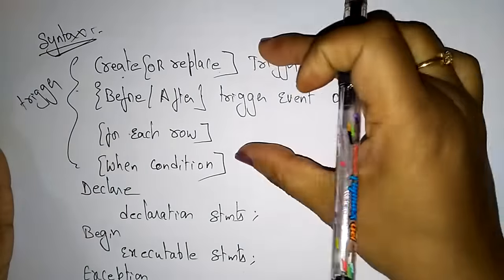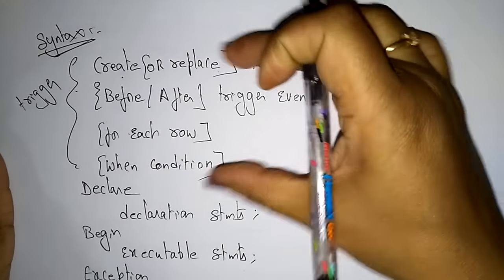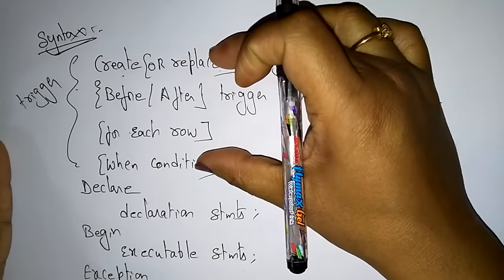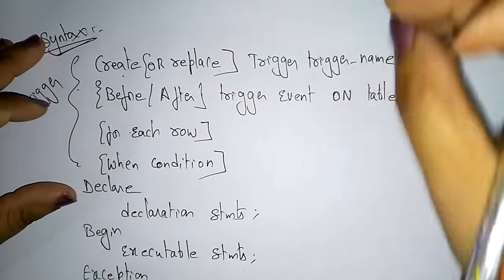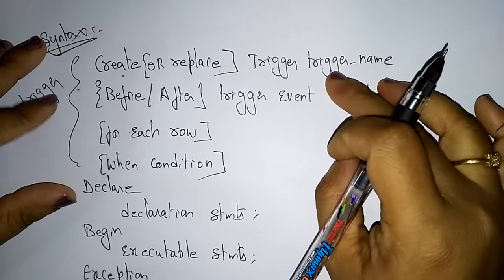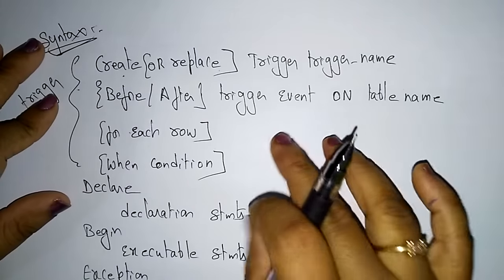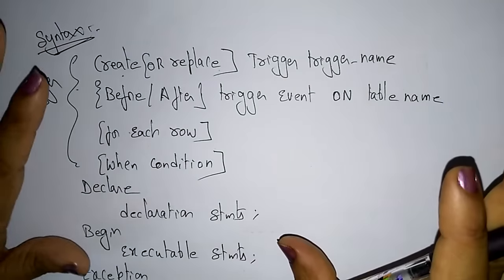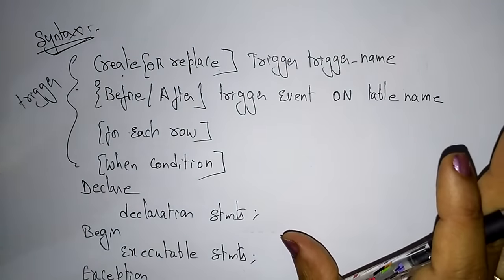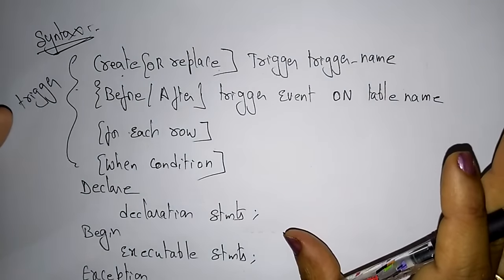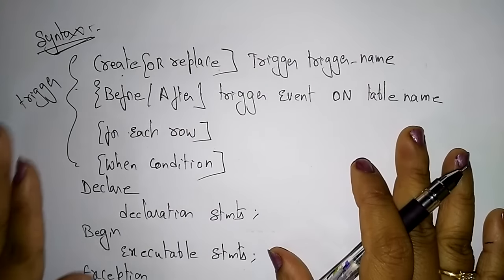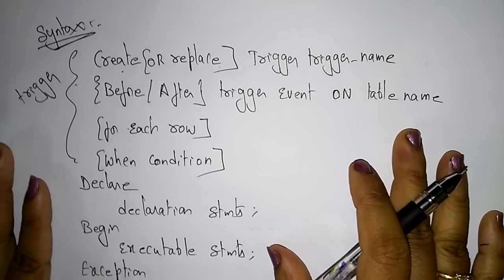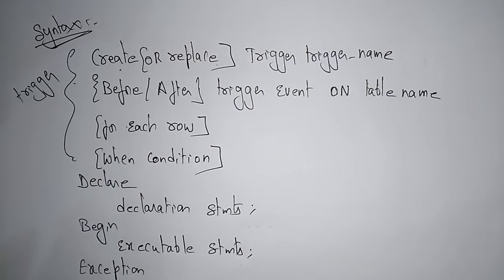In this trigger procedure, the statements are divided into three parts: first an event occurs, after that the condition is checked, and after that it performs the action. I'll explain this with an example in the next video. Thank you.